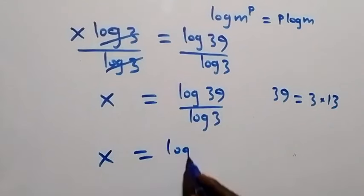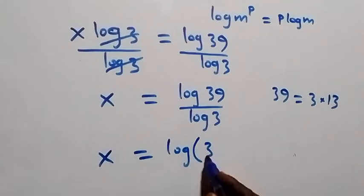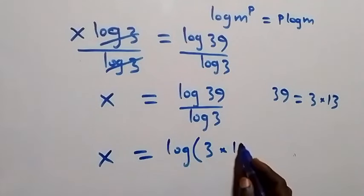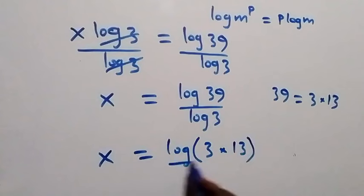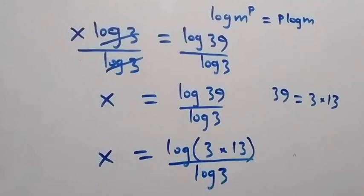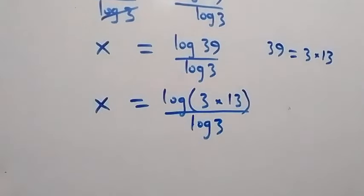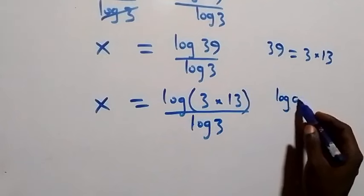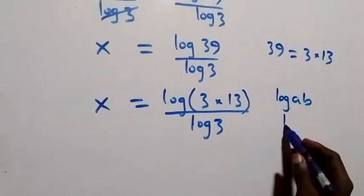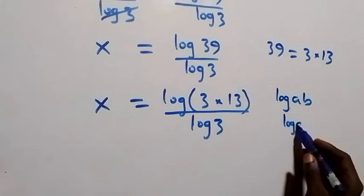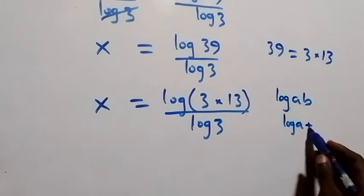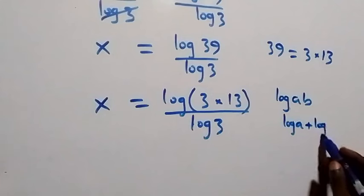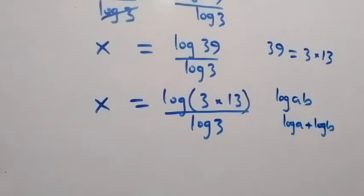So we have x now equals to log of three times thirteen, divided by log three. When we apply the law of log — log a times b can be written as log a plus log b — what we have here becomes x equals to log three plus log thirteen, all divided by log three.